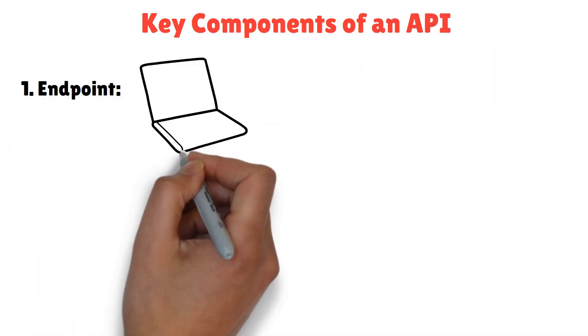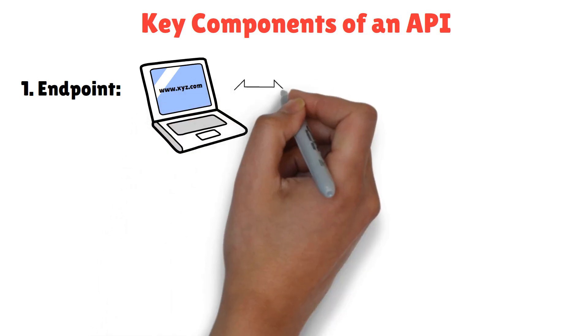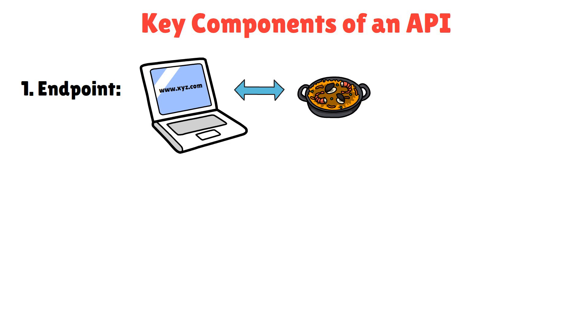Here are the building blocks that make APIs tick. Endpoint. The specific URL where the API can be accessed. Think of it as the address of a particular dish on the restaurant's menu.